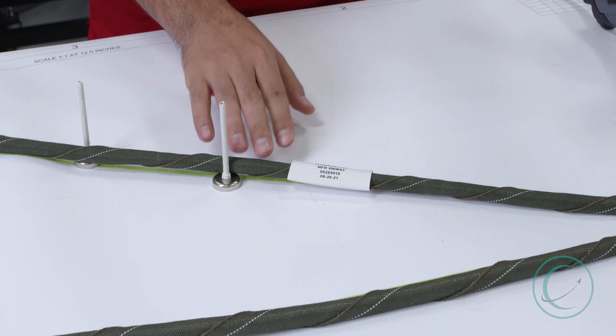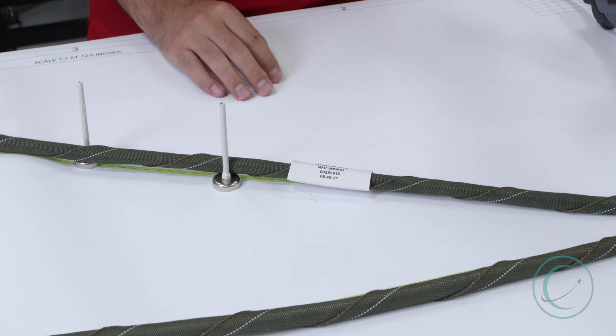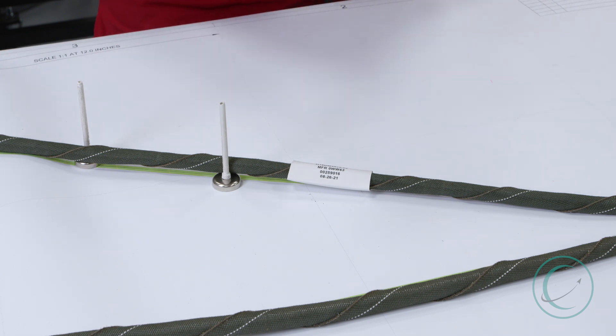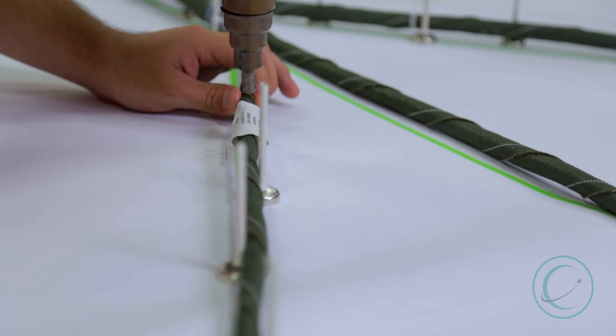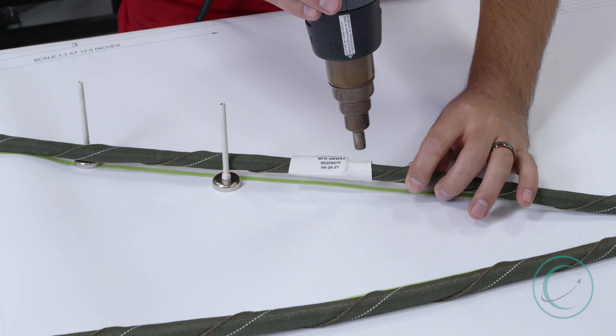You'd warm your heat gun up, let it sit for about 15 seconds to get up to temperature, and then very carefully, you would heat the tubing and let it shrink in the designated place.